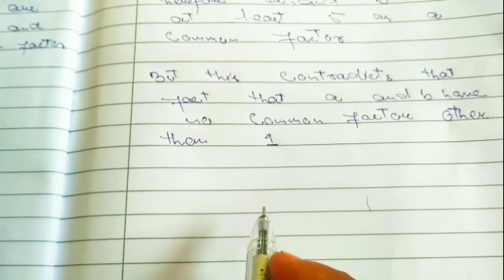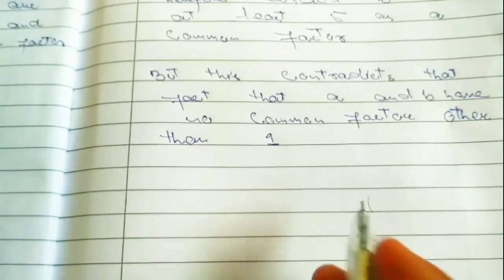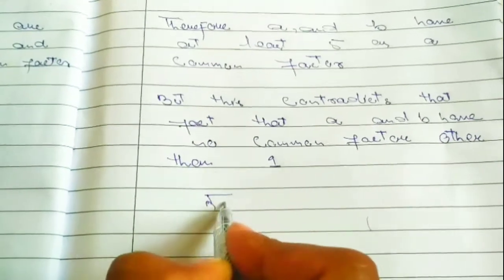So what we assumed was wrong. Under root of 5 is irrational.